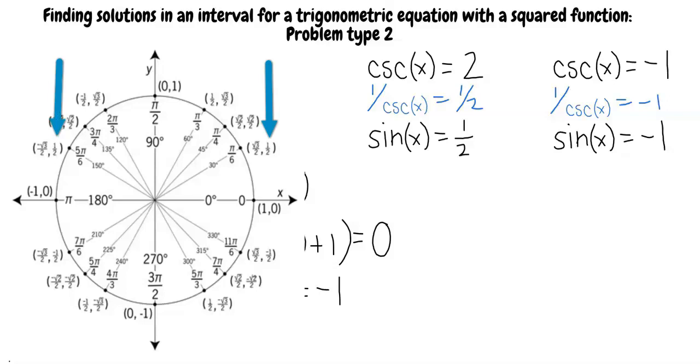This shows us that sine x equals 1 half means that x is pi over 6 or 5 pi over 6. Good!